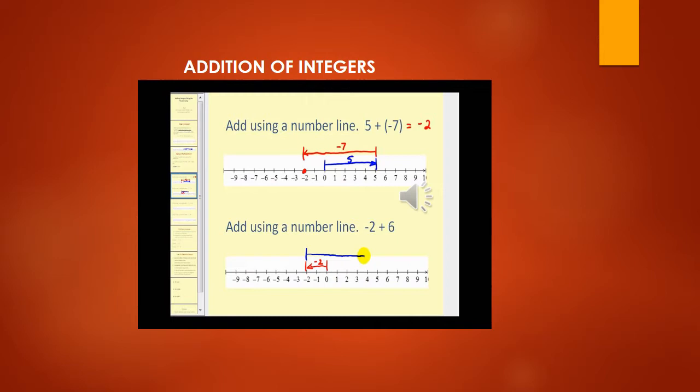Suppose we have two numbers on the number line: 5 and minus 7. We want to add these. So 5 plus minus 7 — the plus-minus becomes minus. So it is 5 minus 7 equal to minus 2. First we mark from 0 to 5, then from 5 we move 7 places to the left up till minus 2. After adding we get minus 2.